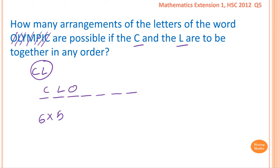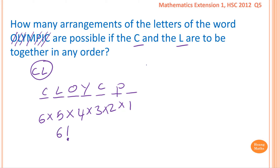Then another letter comes in with four choices, then three choices, then two, and finally one choice for the last letter. That gives us six factorial altogether. But do not forget — C and L can also be arranged as L and C, so we multiply by two to account for flipping them around. The answer is six factorial times two, which equals one thousand four hundred and forty.